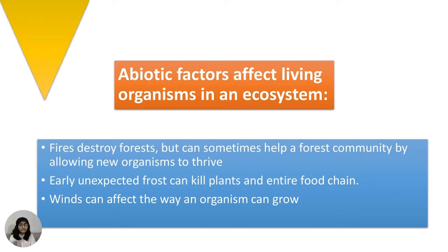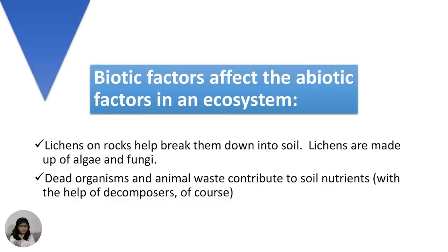Abiotic factors affect living organisms in an ecosystem. Fire can destroy forests but can sometimes help a forest community by allowing new organisms to thrive. An unexpected frost can kill plants and entire food chains. Wind can affect how and where organisms grow. Lichens on rock help break rock down into soil. Lichens are made up of algae and fungi. Dead organisms and animal waste contribute to soil nutrients with the help of decomposers.